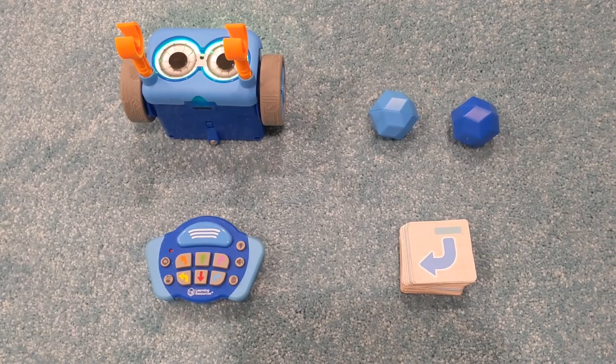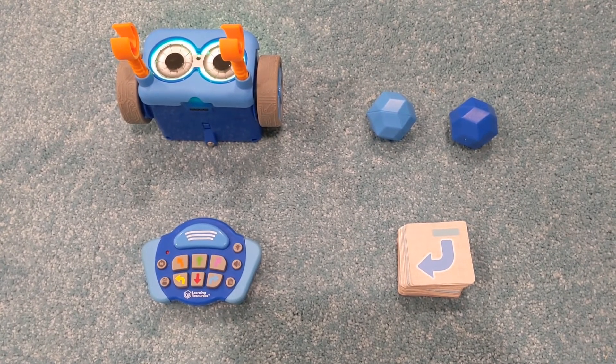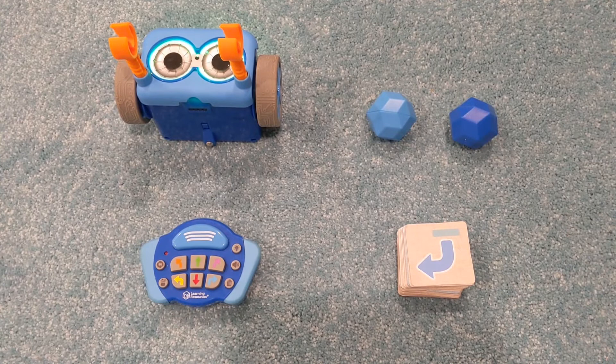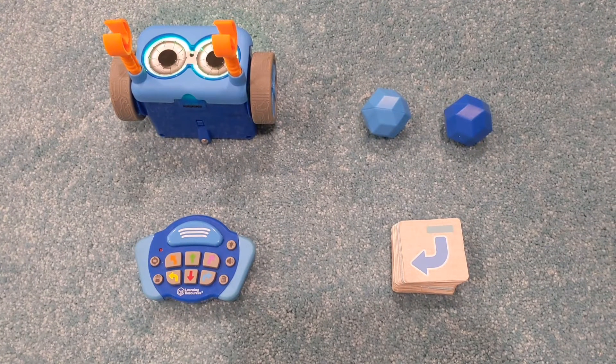For this activity we're going to be using Botly 2.0, but original Botly works just as well. You'll also need his detachable faceplate and arms, or some straws just taped to him. Optionally, a small cereal box.